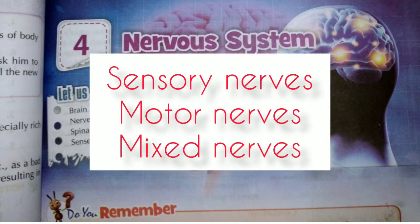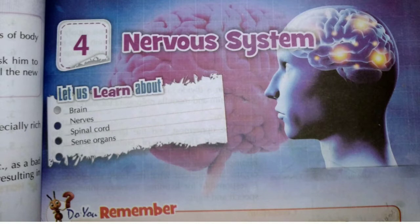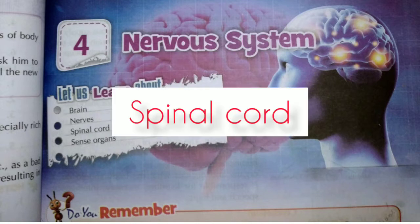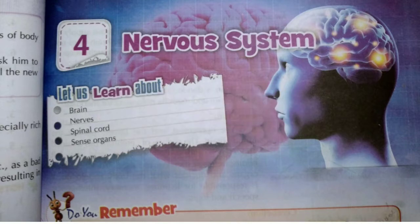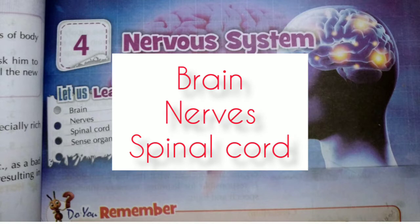We studied sensory nerves, motor nerves, and mixed nerves. Now let us learn about the Spinal Cord. The main parts of the nervous system are the brain, nerves, and spinal cord. We have studied the brain and nerves — now it's time to learn about the Spinal Cord.